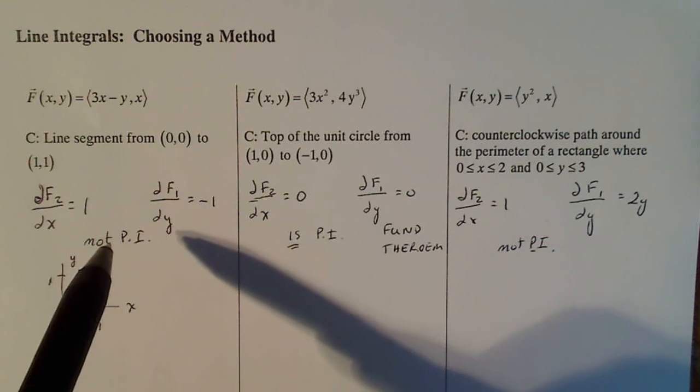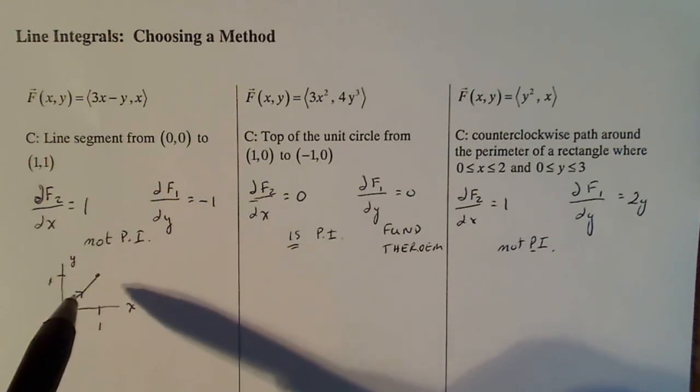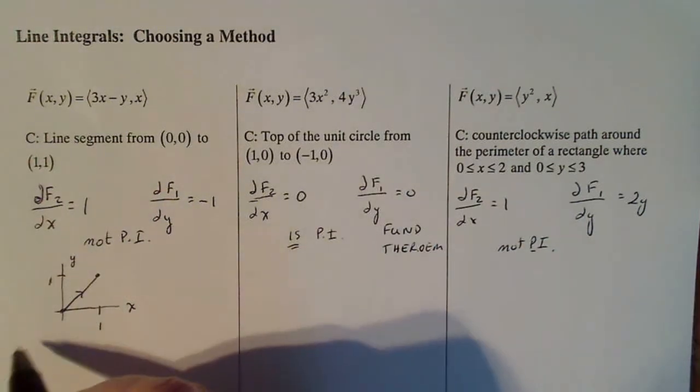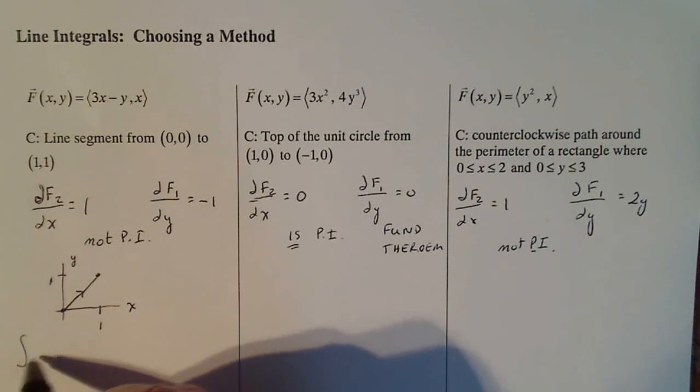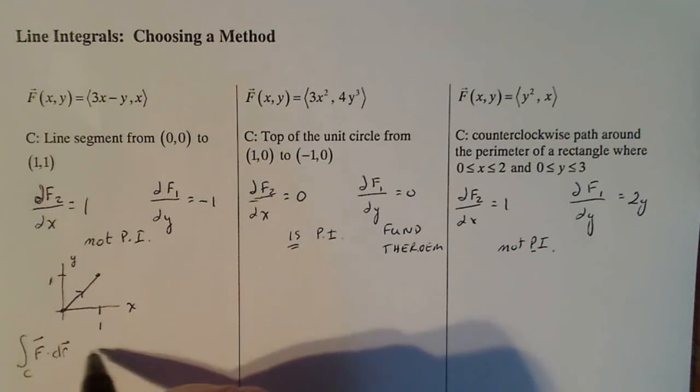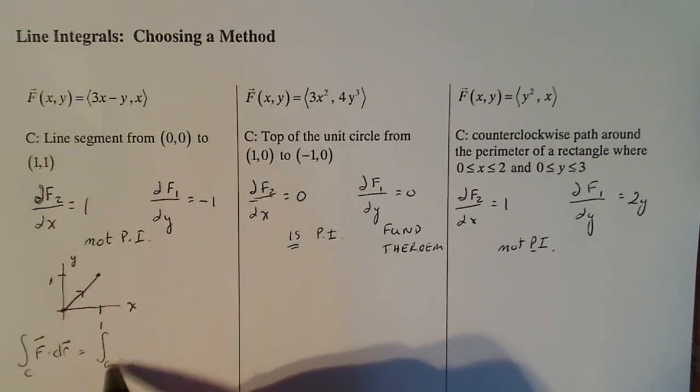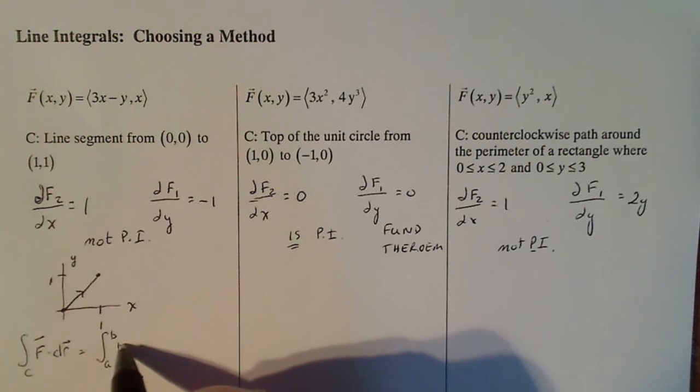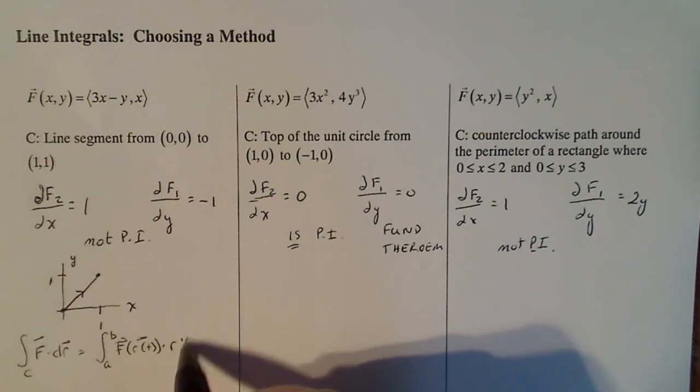So this tells me I can't use the fundamental theorem. This tells me I can't use Green's theorem. So the only method I have is the one that can be described as if I want the line integral f dot dr, that's going to equal to the line integral over from a to b of f of r of t dot r prime of t dt.